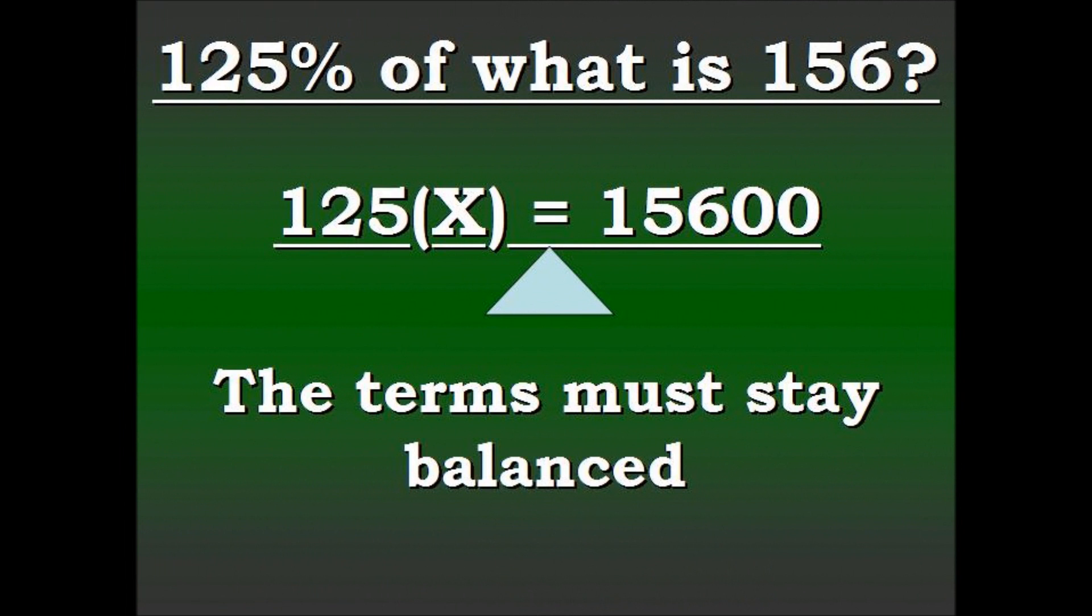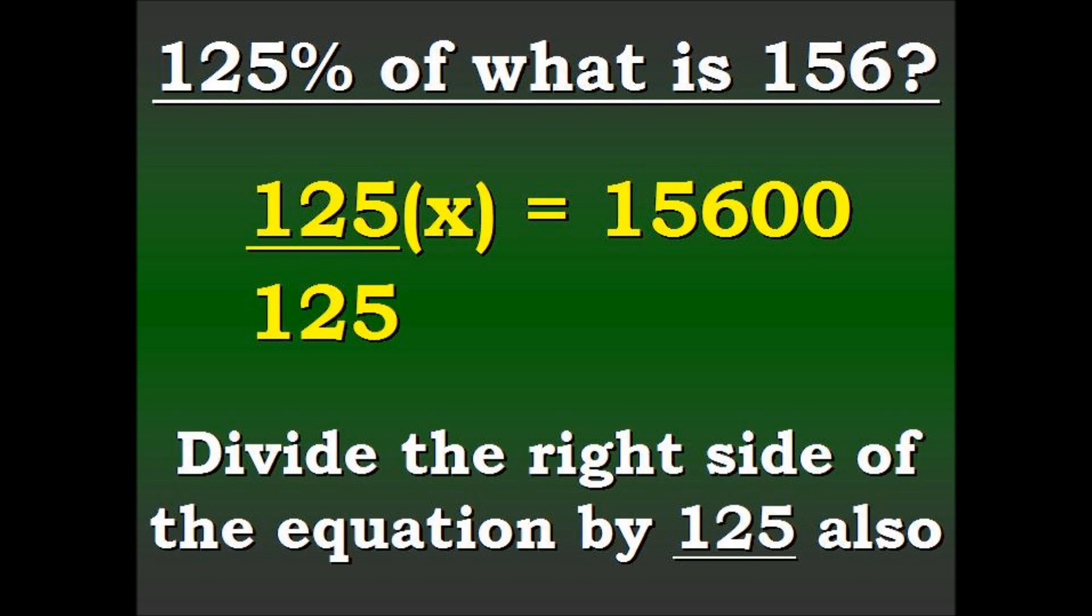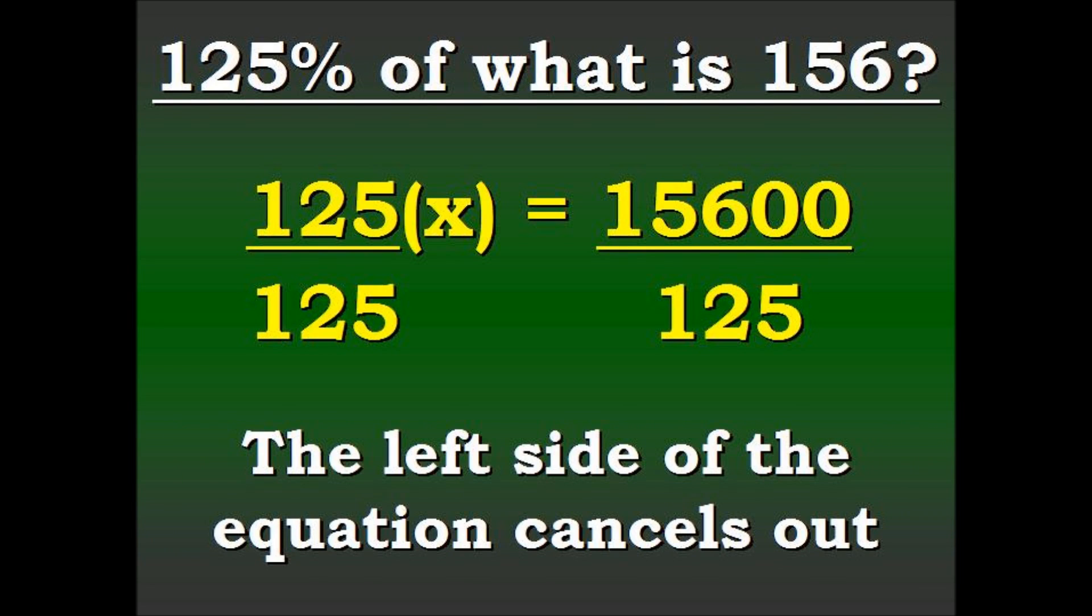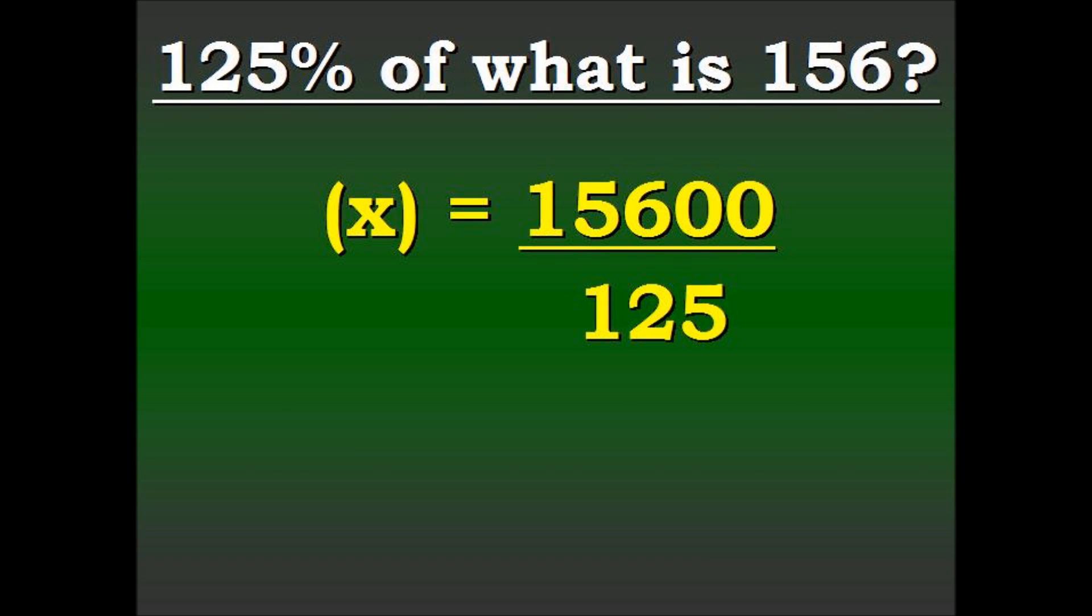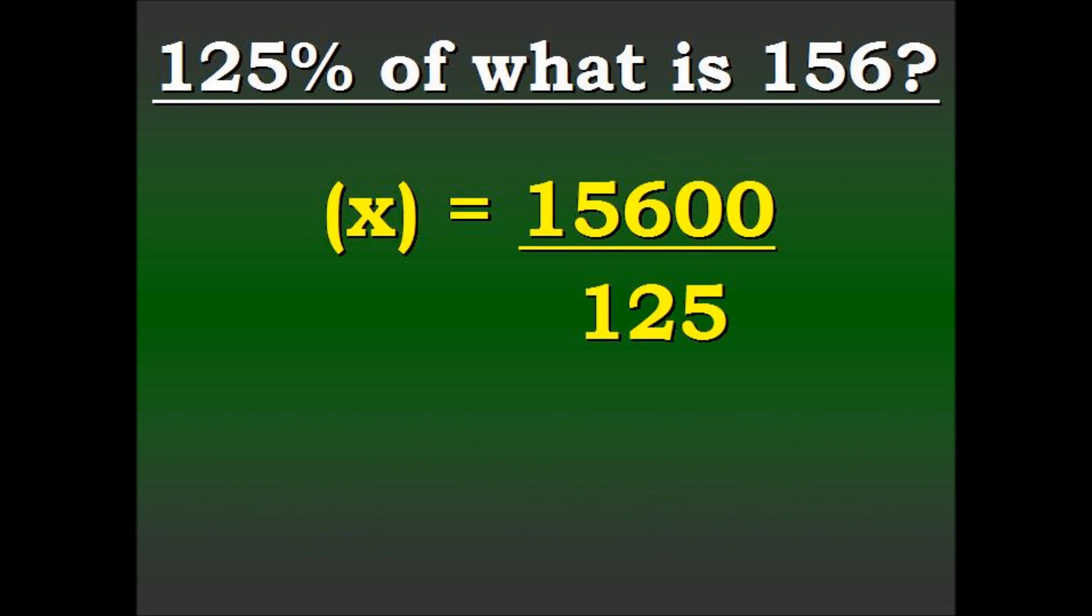Now remember, the terms must stay balanced because this is an equation. So what we do to one side, we're going to have to do to the other. We're going to divide the right side of the equation by 125 also. So here we go. The left side cancels out. That's going to leave X by itself. Now what's left, we divide by 125. And here's our solution.